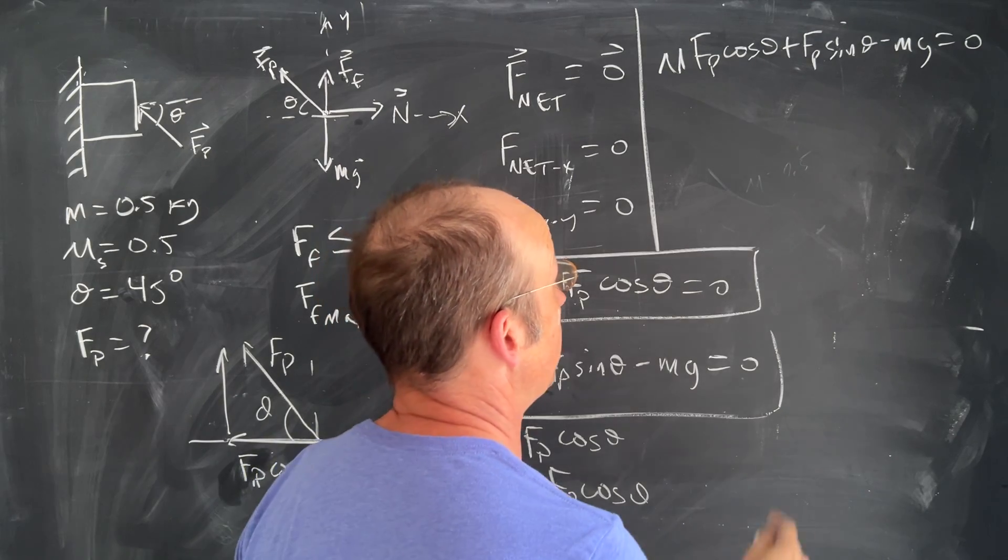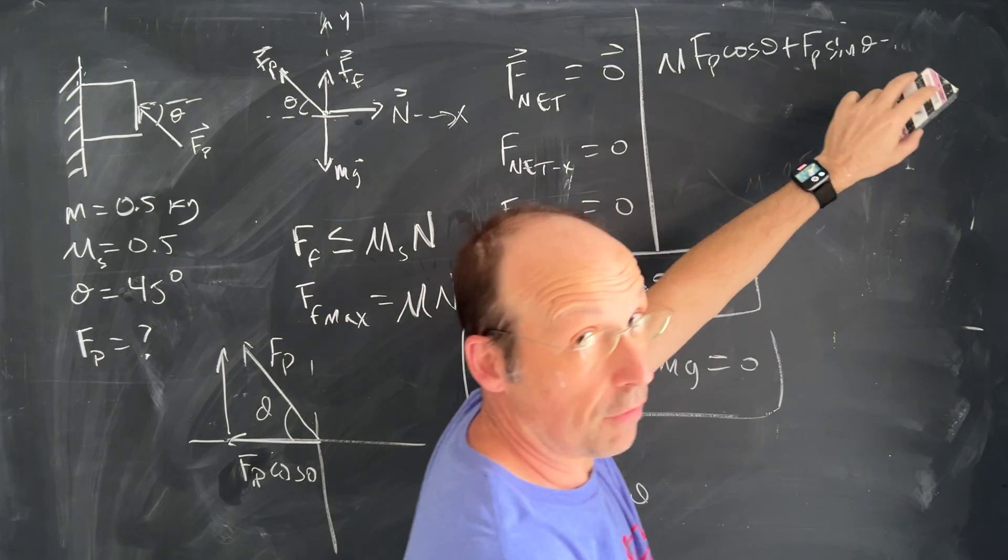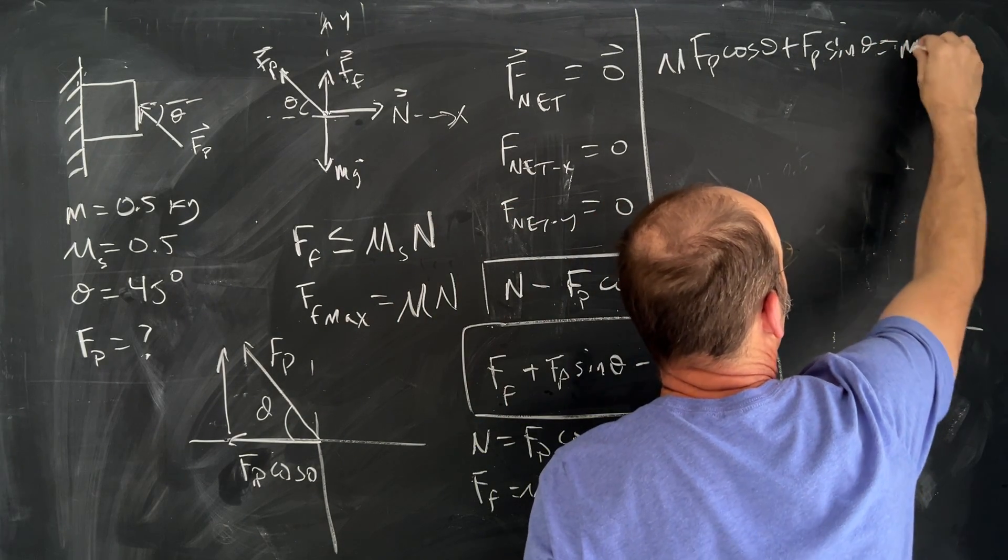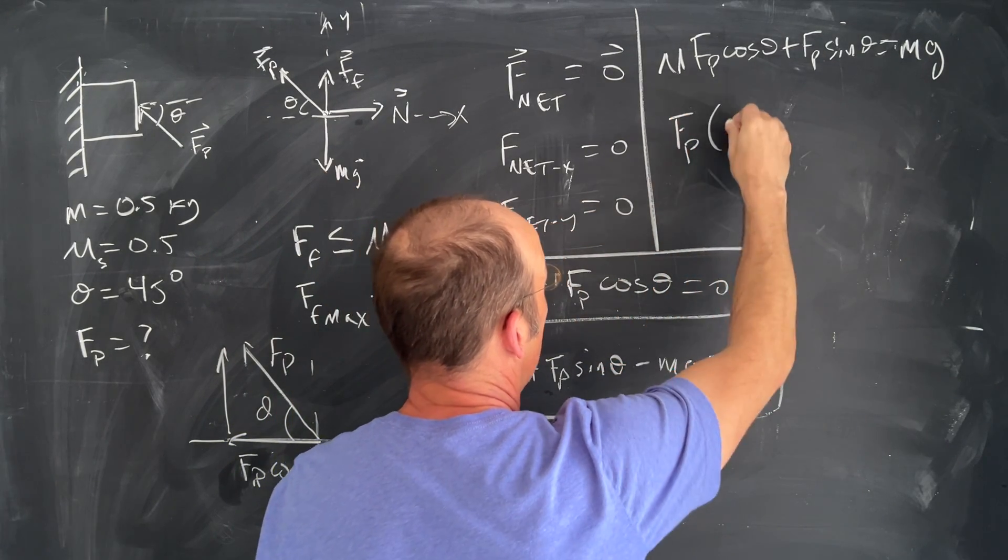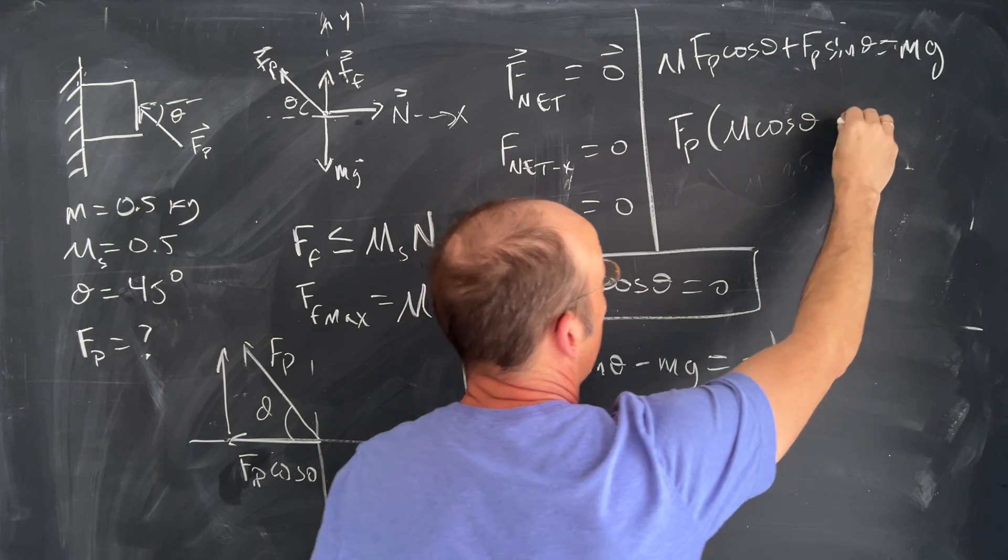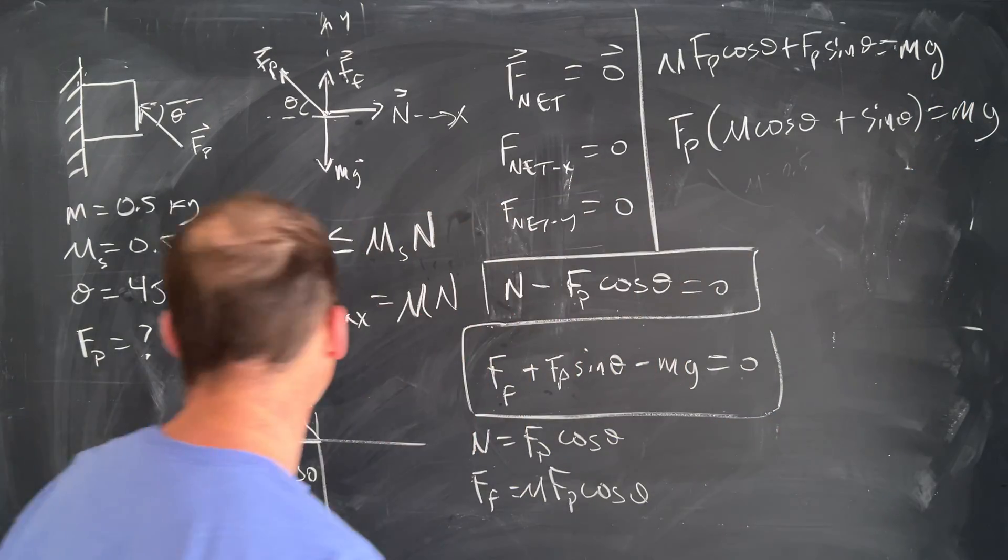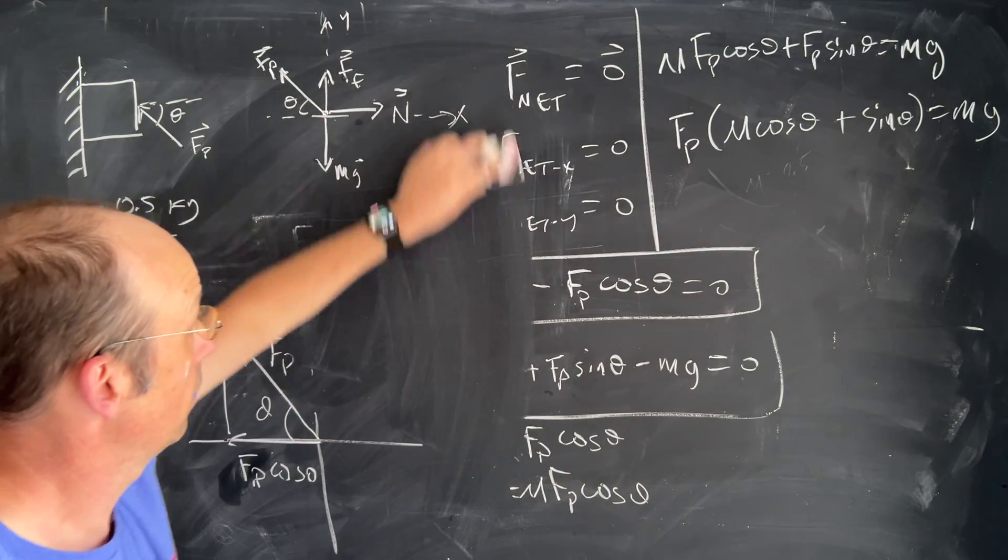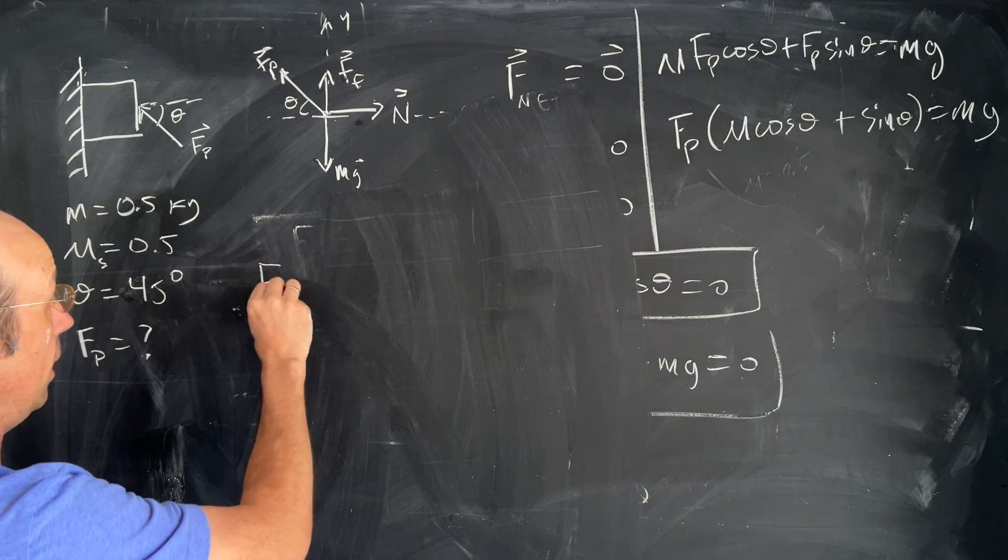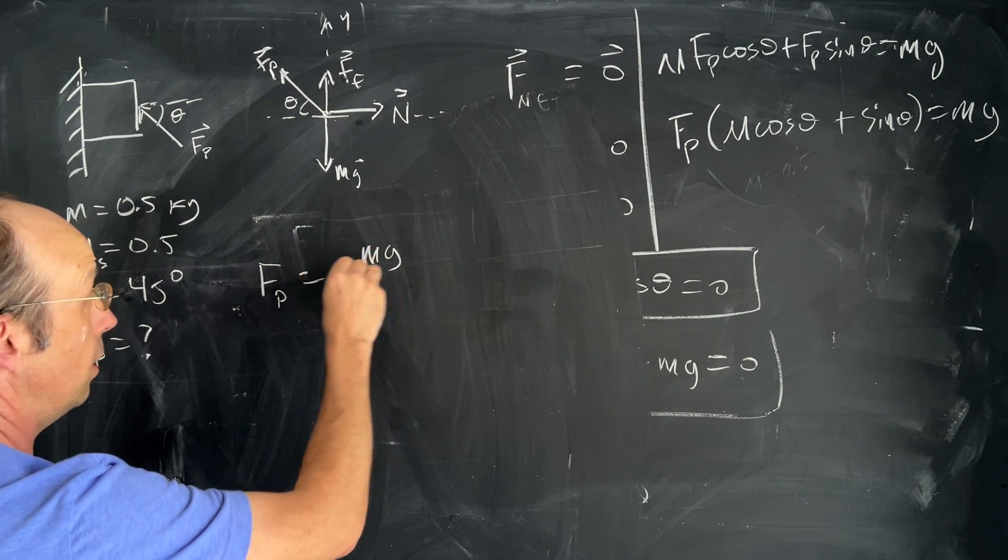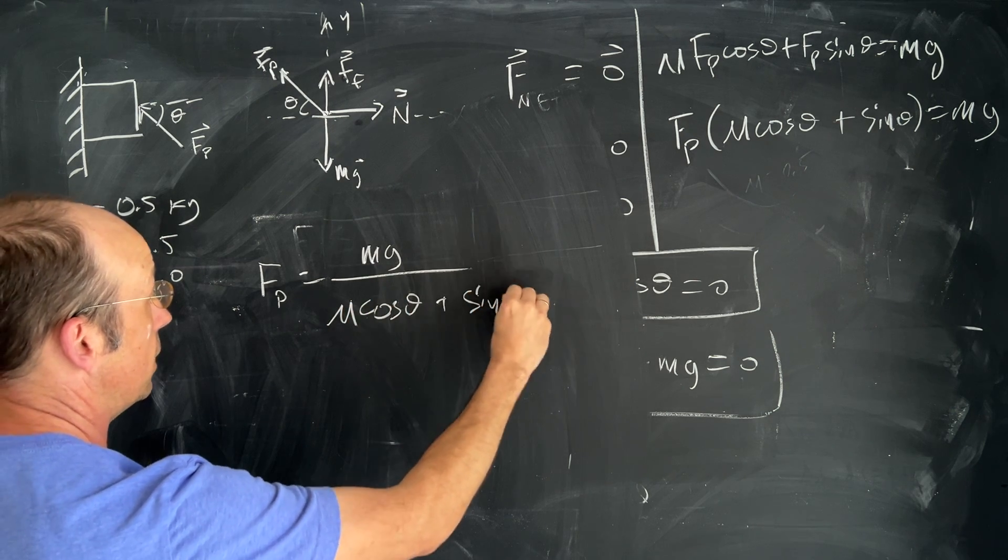So I can solve that for fp. It's not too bad. I'll move this to the other side of the equation, add mg to both sides. The magic of an eraser board equals mg like that. I can factor out the fp, fp μ cosine theta plus sine theta equals mg and then I can solve for the whole thing. So if I solve that for fp I get fp equals mg over μ cosine theta plus sine theta.